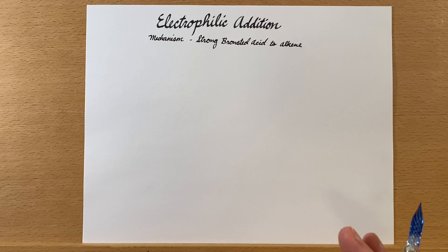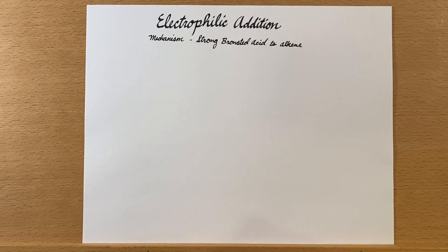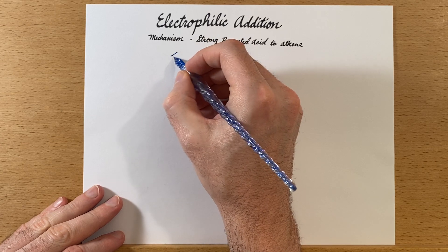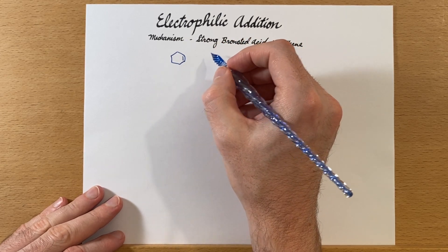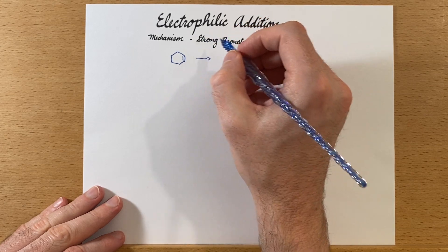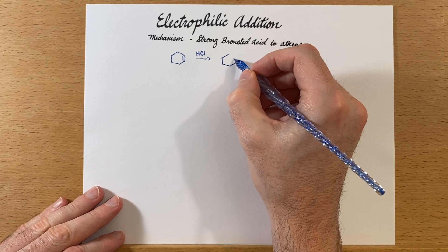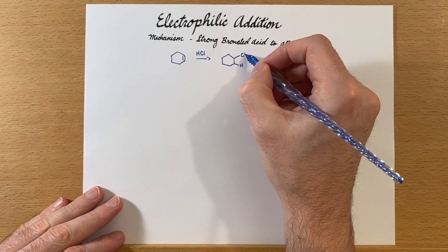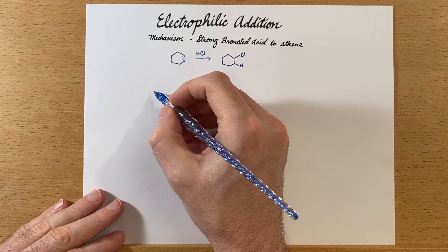Let's talk about the electrophilic addition mechanism, focusing on when we're adding strong Brønsted acids to alkenes. We'll start by drawing the reaction and then talk about the mechanism. Starting with cyclohexene, we'll add one of our favorite strong acids over the double bond. We'll add a proton to one of the carbons that had the double bond and a chlorine to the other — that's the product.